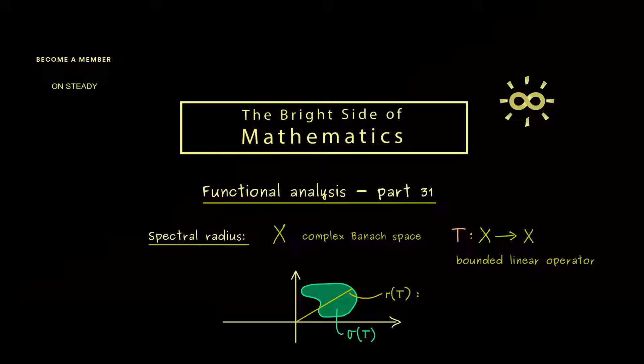And this is what we denote by r of T. So by definition, simply the supremum of the absolute values. So you see we can immediately define this number here. And in this video we will show that this is indeed always a finite number. More concretely, the spectrum is not the empty set and also a bounded set.